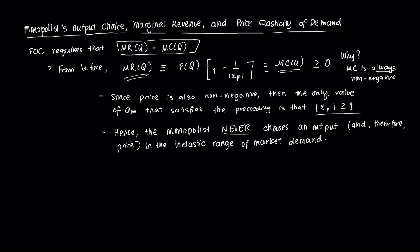Which means that it is on the elastic portion of the demand curve because this expression here precludes elastic demand. So we're going to explain that graphically in the next slide. And because of this, the monopolist will never choose an output and price in the inelastic range of market demand.